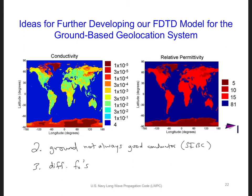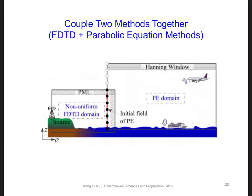We would also want to develop an SIBC that is frequency dependent. Fourth, the Earth's topography could be important to take into account in some scenarios. We can account for the topography directly in the FDTD model by changing the altitude at which we implement the SIBC.